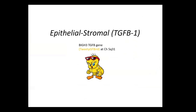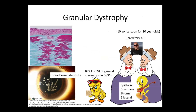Now we're going into the epithelial-stromal dystrophies. The epithelial-stromal group all involve TGF-beta, so I think of Tweety Bird as the growth factor. That's always on chromosome 5q31 and it's the BIGH3 gene. Granular dystrophy is the first one — think of a grandma, bilateral, affecting both eyes. She's swooning over Vin Diesel — autosomal dominant. Tweety Bird has a bow tie and is strumming the guitar, so it's epithelial, Bowman's, and stromal.